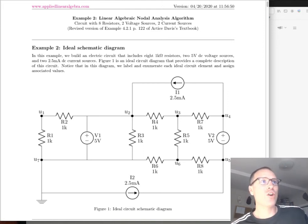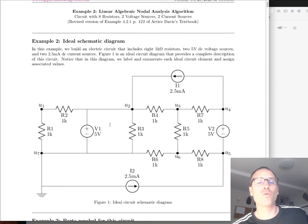The example that you see here on screen focuses on a circuit with eight resistors, two voltage sources, and two current sources. Before we dive into this circuit and then build it using our actual laboratory equipment, I want to give a shout out real quick.